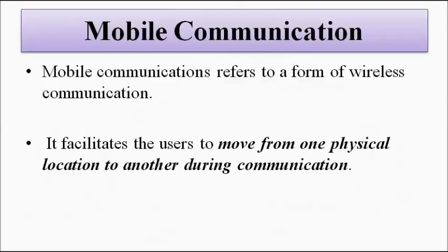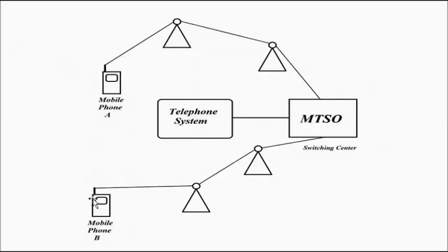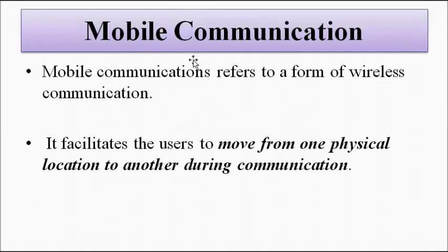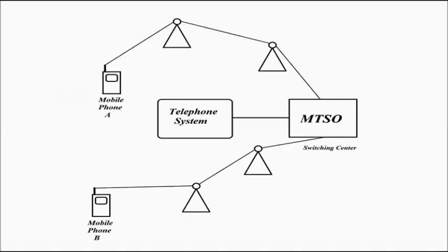In mobile communication, the two end-user devices are free to move with respect to each other, whereas in all other communication methods they must be stationary. Mobile communication facilitates wireless communication between two end-user devices even when they are moving. Information is transmitted from sender to receiver through multiple stations and a switching center, which is also connected to the main public telephone system.